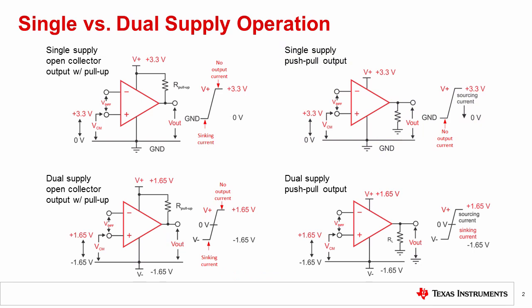On the upper right is the push-pull comparator configured for single supply. In this case, the output is connected to a load resistor. When the output of the comparator is low at 0 volts, the output current is 0 because the voltage across the load is 0. When the output is high at 3.3 volts, the comparator sources current equal to 3.3 volts divided by the load resistance.